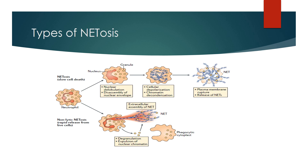NETosis is of two types. The first is lytic NETosis, also named suicidal NETosis, in which DNA threads come out due to rupture of the plasma membrane of the neutrophil, causing neutrophil death. The second is non-lytic NETosis, also called vital NETosis, which helps in killing pathogens by entrapping them in extracellular traps and triggering antimicrobial activity.